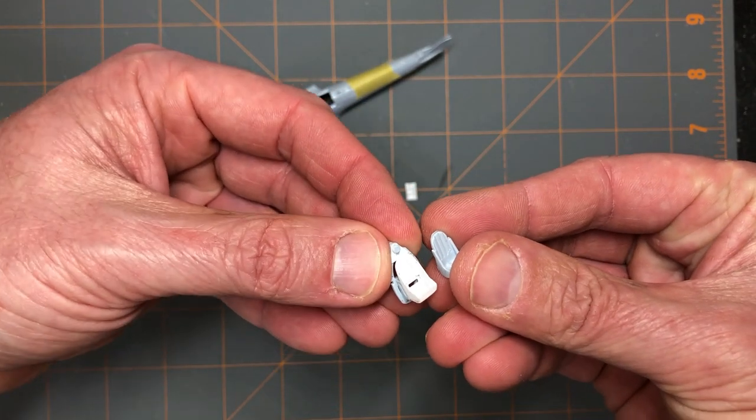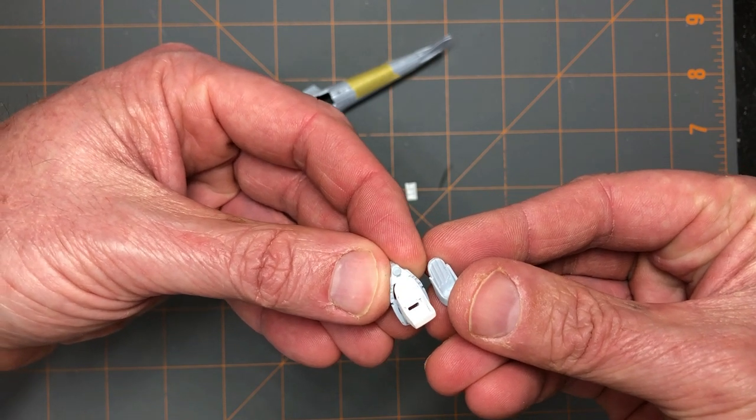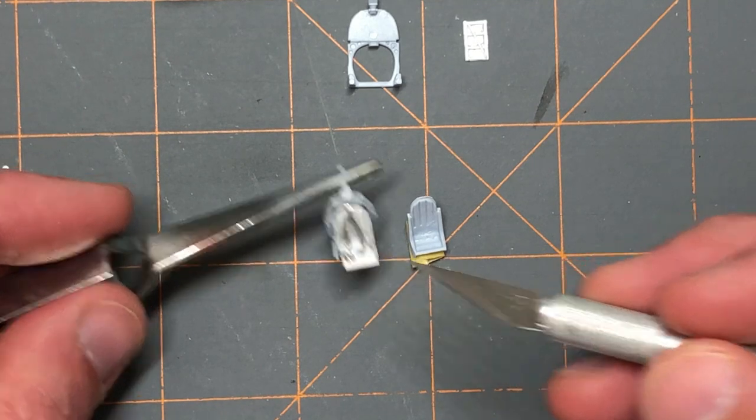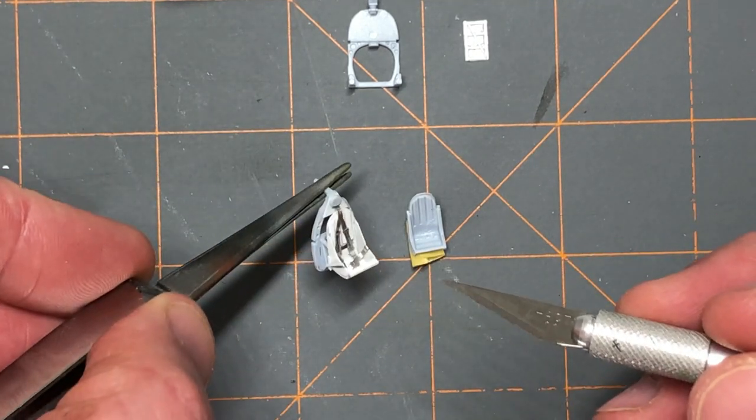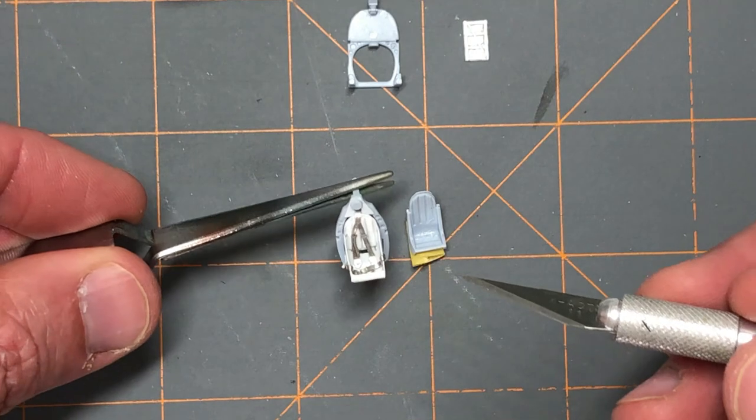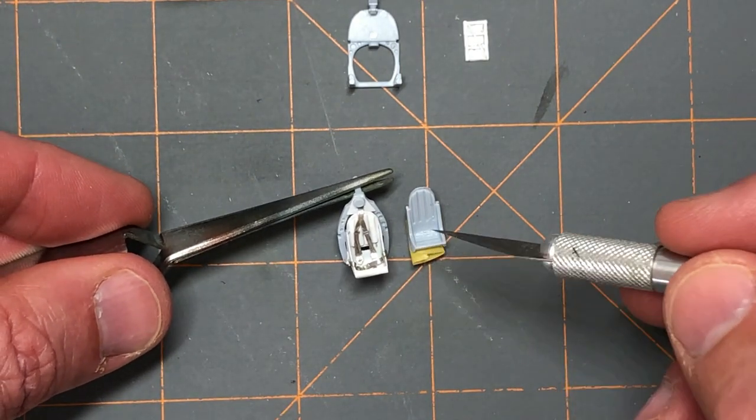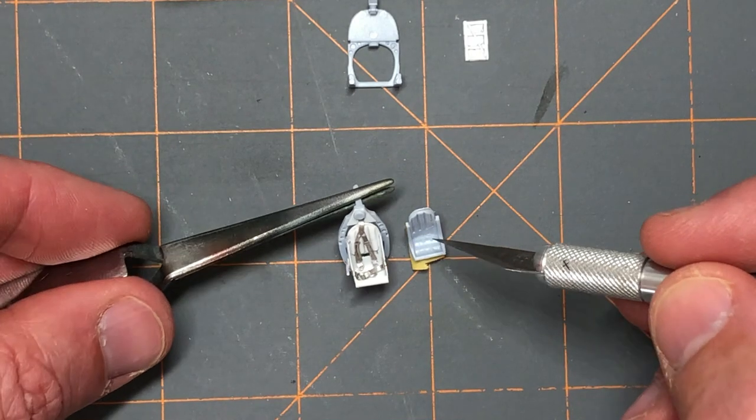I went ahead and made some foil seat belts. You can see here it adds a lot more dimension to the seat. I described those in a previous video, so you can check that out if you want to do this. You're on your own, quite a bit different from the kit seat.